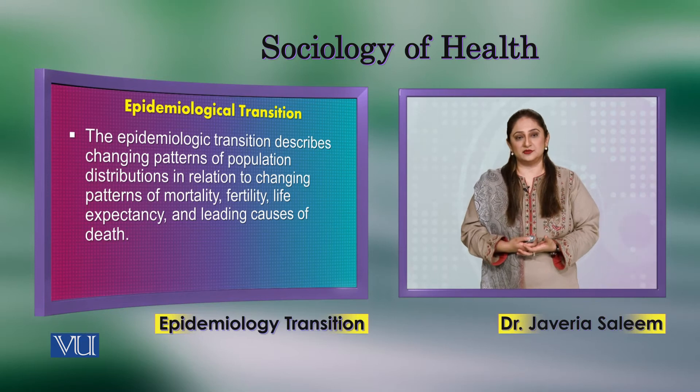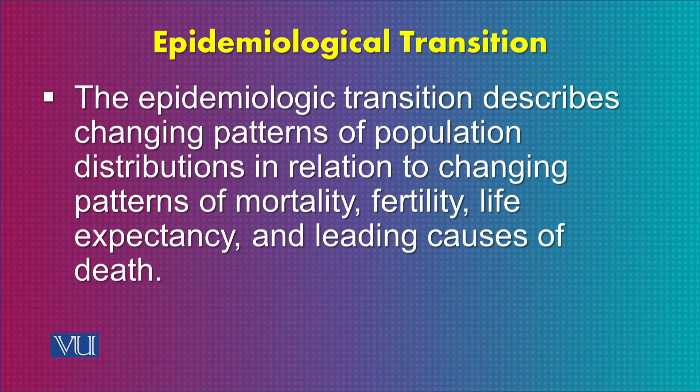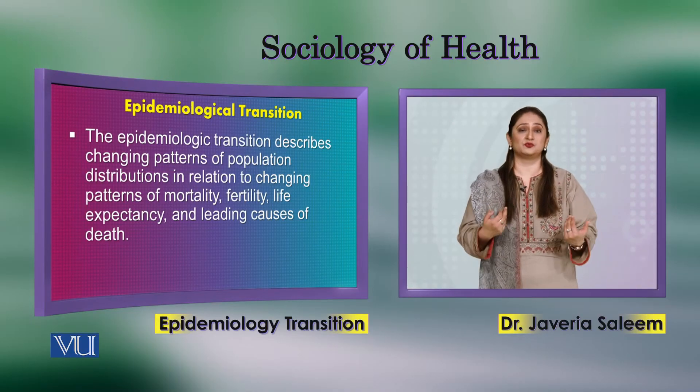The epidemiological transition can also be defined as the changing pattern of population distribution in relation to changing patterns of mortality, life expectancy, and leading causes of death. As infectious disease rates declined and resources improved, fatality decreased. Previously, if a family had 4 children, only 2 might survive; with more resources, more children survive, life expectancy has increased, and the leading causes of death have shifted from acute infectious diseases toward chronic conditions.